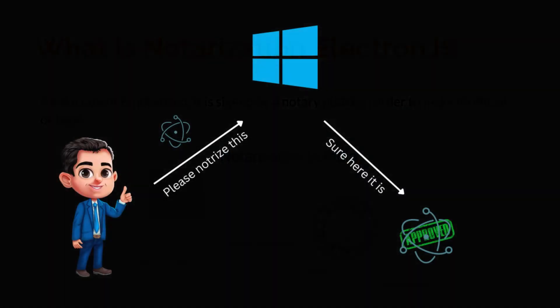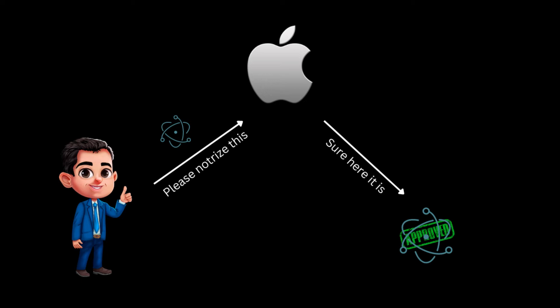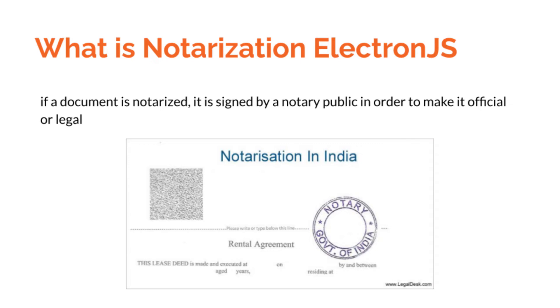In our case, the document will be our created ElectronJS desktop application, and the notary public office — the authorized organization that verifies whether the document is authentic — will be our operating system. If we are creating an application for Windows, we need to notarize it through Windows. If we are creating it for Mac, we notarize it through Mac. Every operating system provides its own way of notarization, and we'll see how to notarize our ElectronJS application for the Mac operating system.